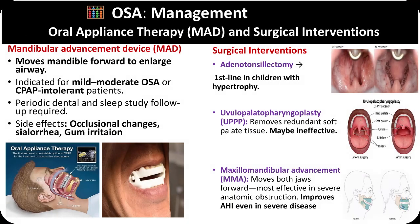Management of OSA may include oral appliance therapy and surgical interventions when CPAP is not tolerated or effective. Mandibular advancement devices work by moving the lower jaw forward to enlarge the airway and are most suitable for patients with mild to moderate OSA or CPAP intolerance, though they may cause occlusal changes, gum irritation, or drooling. Surgery is indicated when CPAP fails, anatomic obstruction is clearly identified, or OSA is severe with surgically correctable features. Surgical options include adenotonsillectomy — first-line therapy in children with tonsillar hypertrophy — and uvulopalatopharyngoplasty, which removes redundant soft palate tissue but may be ineffective. Maxillomandibular advancement, which repositions both jaws forward, is an effective surgical treatment for severe or anatomically obstructive OSA, significantly improving the apnea-hypopnea index.